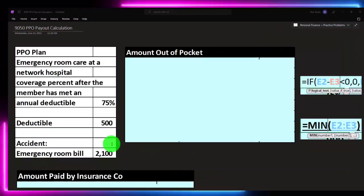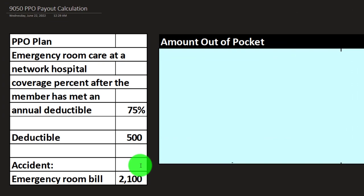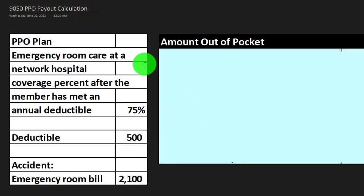On the left-hand side, we're imagining we have a PPO medical insurance plan and we have a claim — an emergency room bill of $2,100. The information on the plan: emergency room care at a network hospital, coverage percent after the member has met the annual deductible is 75%, and the deductible is $500.